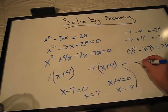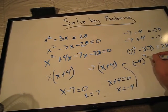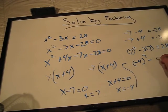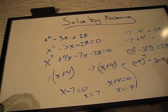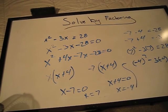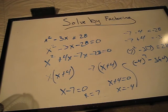Now we'll check x = -4: (-4)² - 3(-4) = 28. That also checks out. And that's how you solve by factoring.